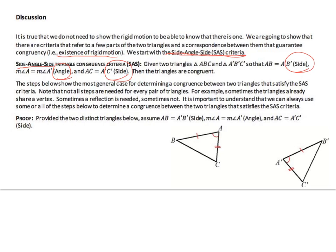The steps below show the most general case for determining a congruence between two triangles that satisfy the SAS criteria. Note that not all steps are needed for every pair of triangles. For example, sometimes the triangles already share a vertex; sometimes a reflection is needed, sometimes not. It is important to understand that we can always use some or all of the steps below to determine a congruence. So let's look at our proof.